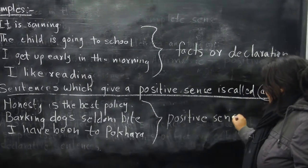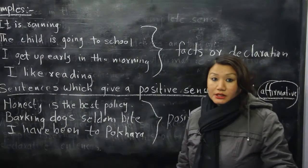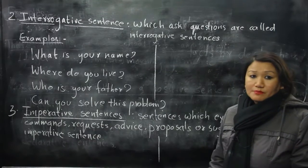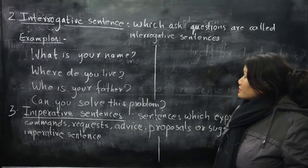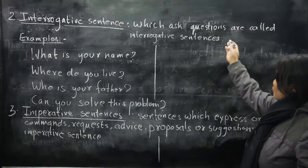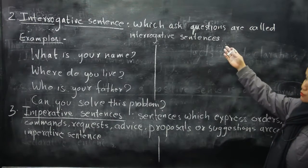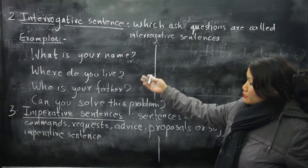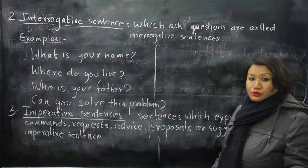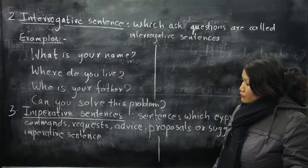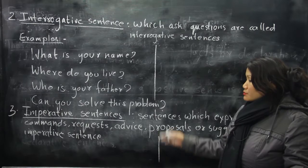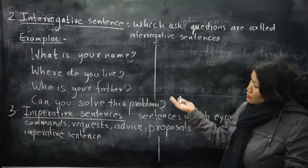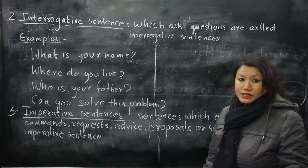The second kind is the interrogative sentence. Sentences which ask questions are called interrogative sentences. For example: 'What is your name?' 'Where do you live?' 'Who is your father?' 'Can you solve this problem?' Any sentence which expresses a question is called an interrogative sentence.